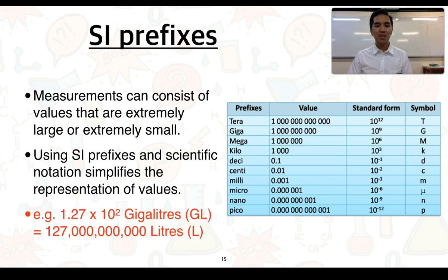Now, in regards to SI prefixes, we can often represent units using these prefixes. So in this table here, we can see things like kilo, mega, giga, or on the smaller scale, milli, micro, nano being used to either represent very large units or very small units.